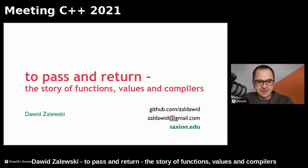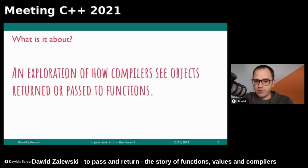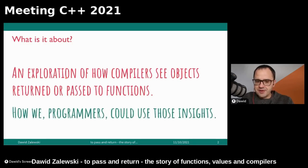Good afternoon, everyone. As Filipe already said, my name is David Zalewski and I will be talking today about how to pass and how to return. The whole talk is more of a free exploration of how compilers see the objects and how they pass them between different functions, whether it's passing as an argument or whether it's returning from a function. The talk is also about how we as programmers could use those insights to program better and optimize the code a bit better.